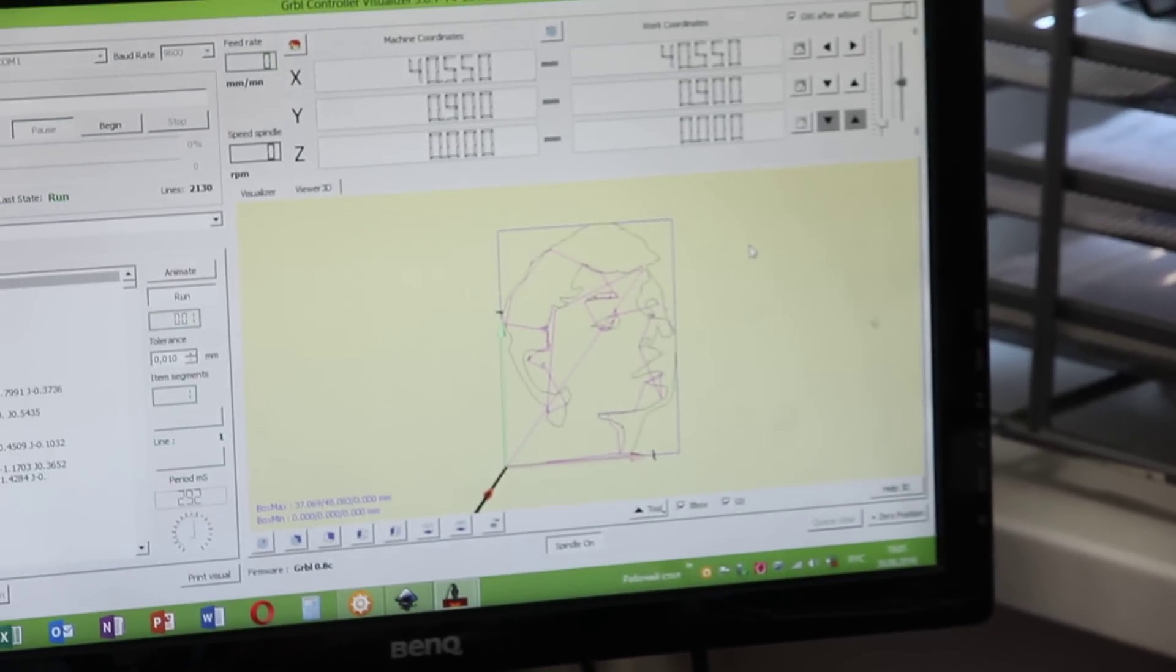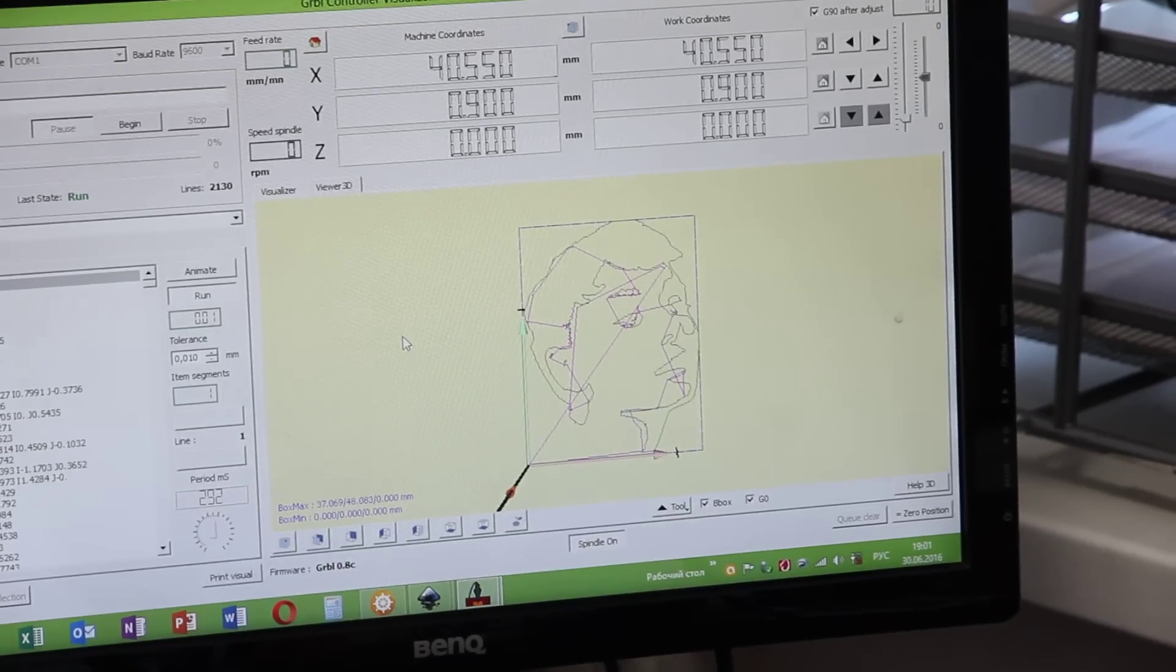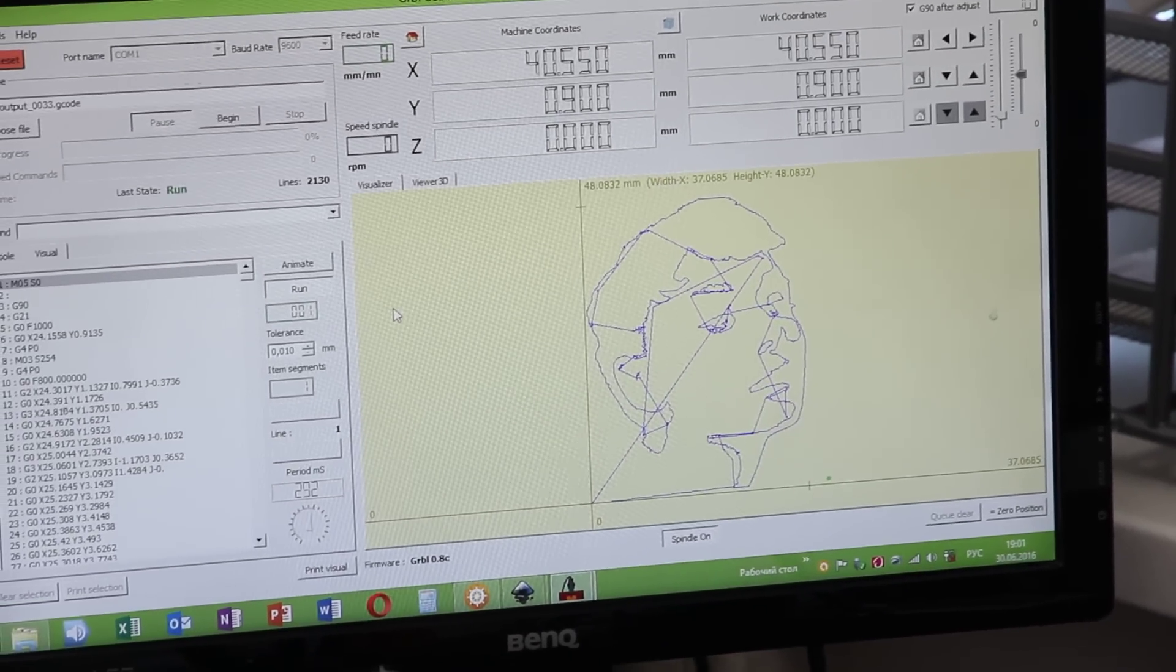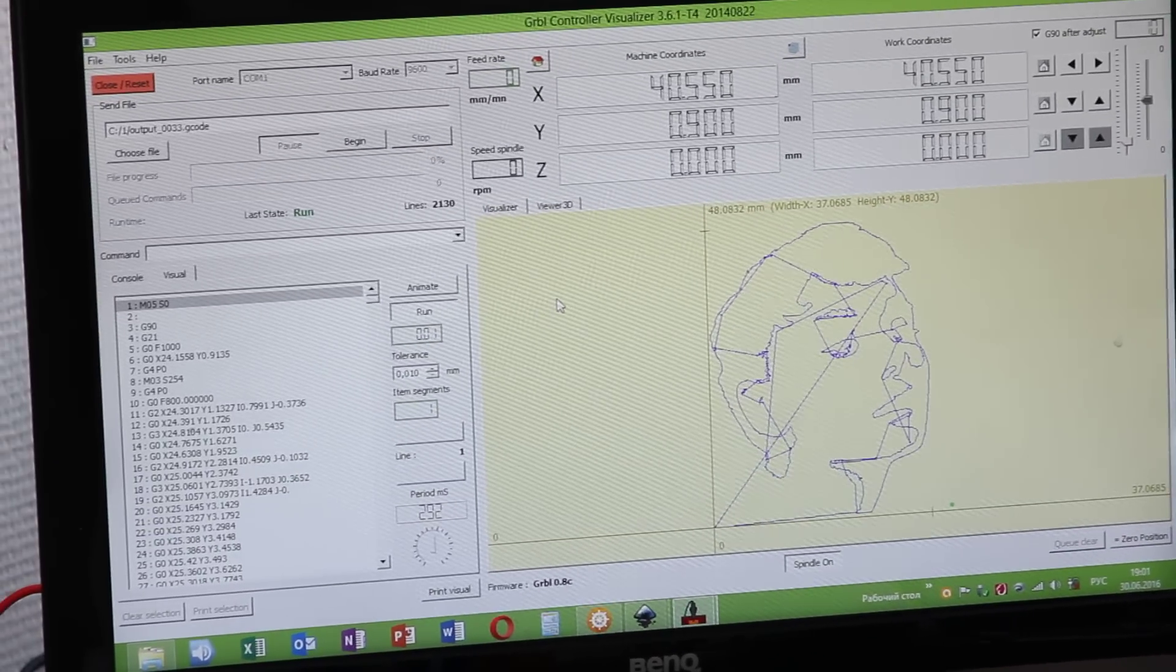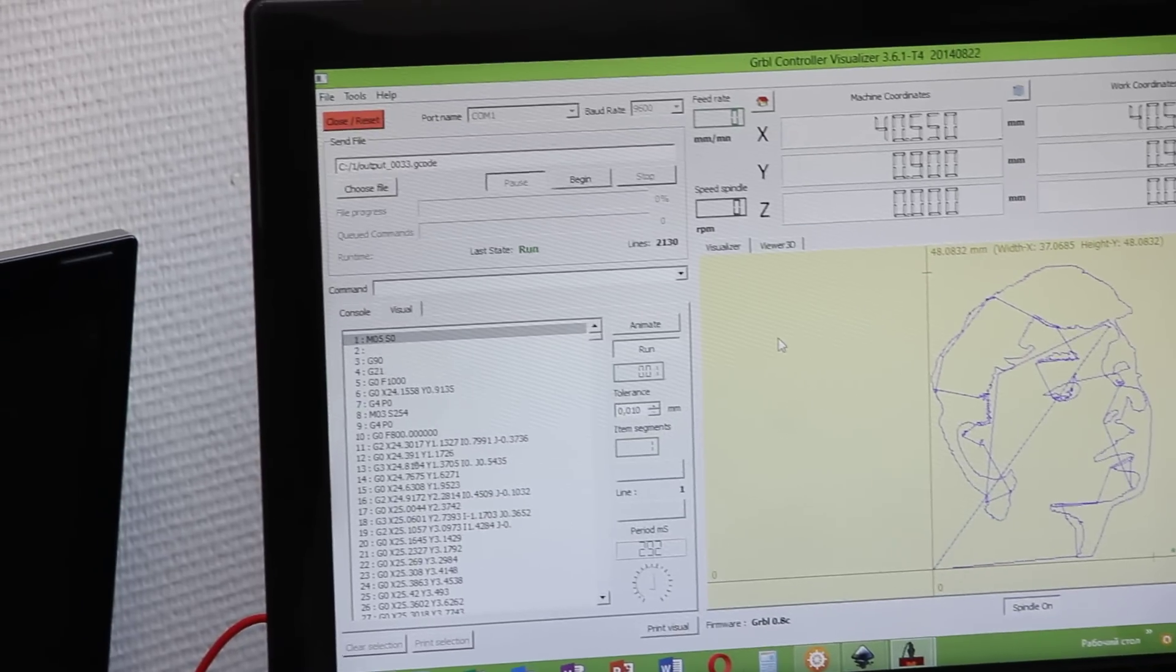So you see the image, it's a woman portrait. It's already converted into G-code, and we are going to engrave it on glass with a powerful 3.5 Watt diode laser.